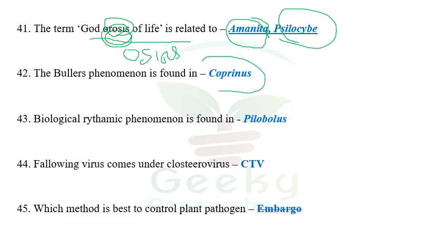The next question: Buller's phenomenon is found in Coprinus cinereus. The options included Coprinus or Phallus or something similar, but Buller's phenomenon is commonly observed in Coprinus. The next question: biological rhythmic phenomenon can be found or observed in Pilobolus. In Pilobolus we can see the biological rhythmic phenomenon.